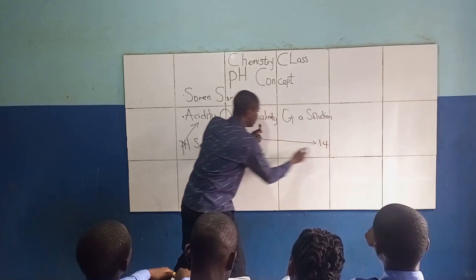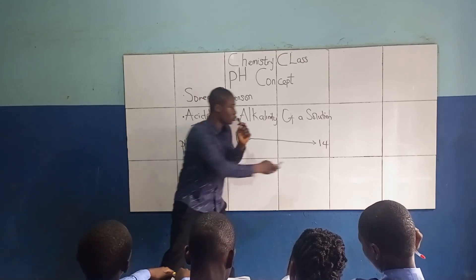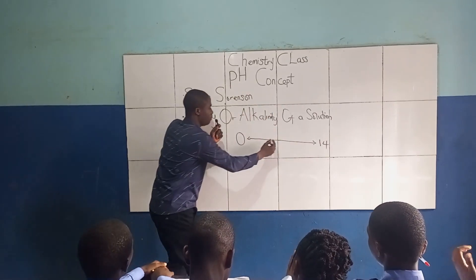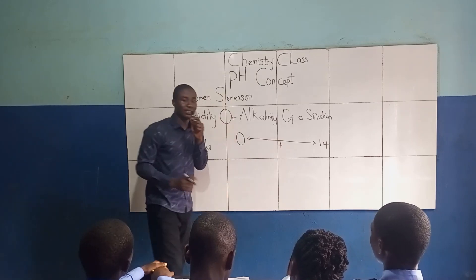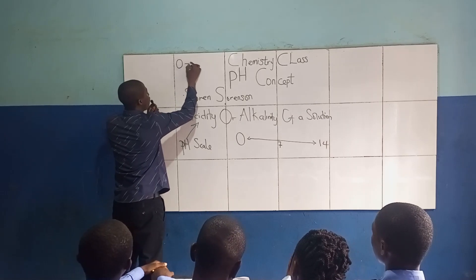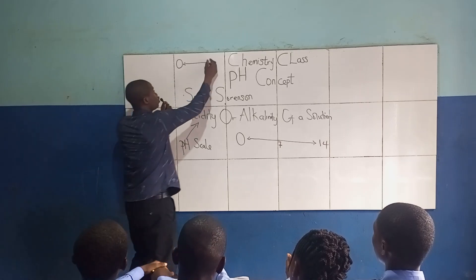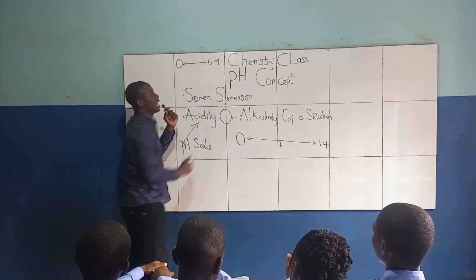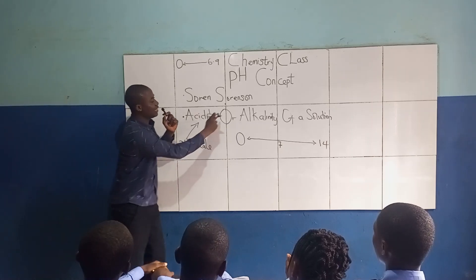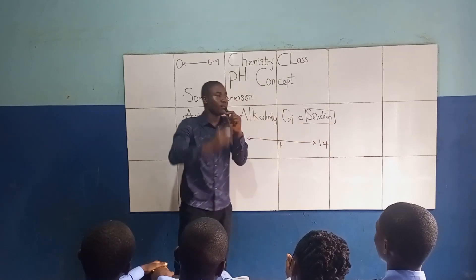You can see the arrows — one arrow is moving towards zero and another arrow is moving towards 14. Between zero and 14, the middle number is 7. It must be noted that when we have values on the pH scale ranging from 0 to 6.9...